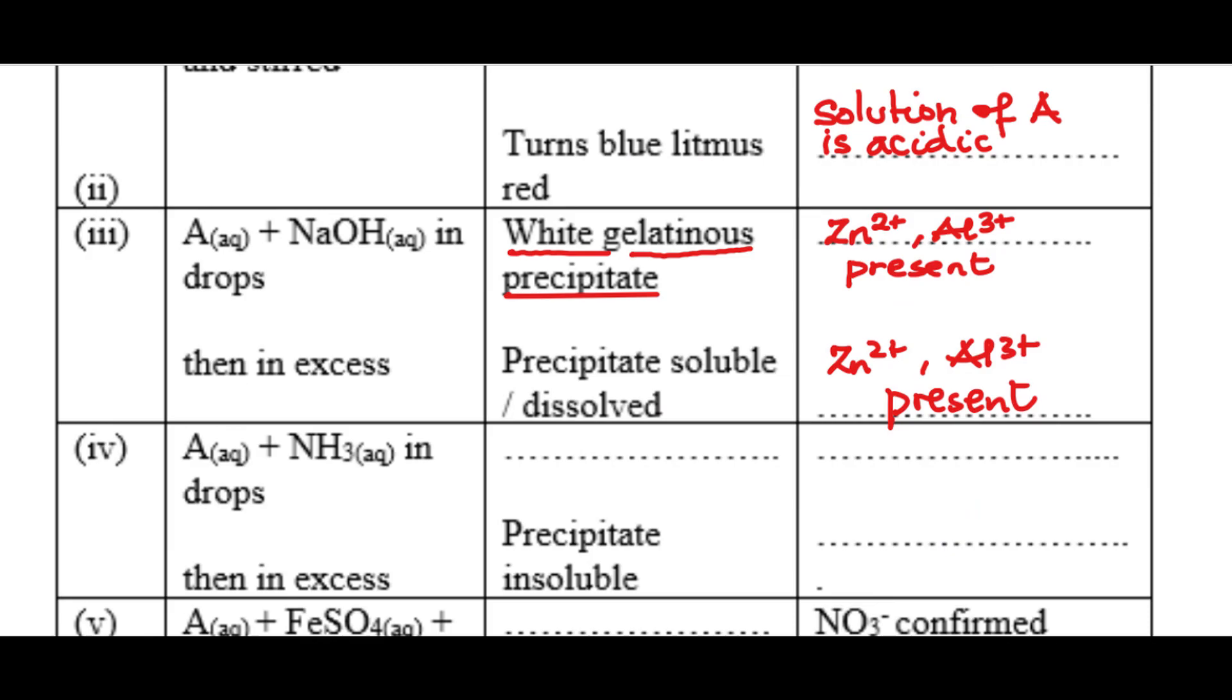So as you can see here, A aqueous, that's another portion of solution of A plus aqueous ammonia in drops. We are required to fill the observations. But let's see the next step. Then in excess precipitate insoluble. So it means that from the first test there was a precipitate that was formed and we will be required to state the color and nature of that precipitate, which is white gelatinous. So that would be white gelatinous precipitate is formed.